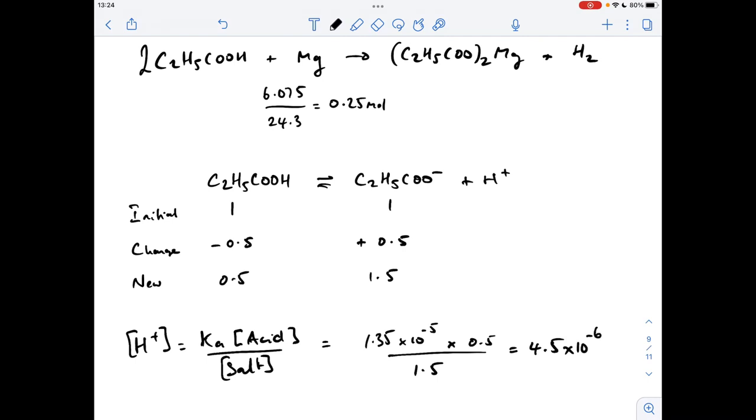So the new pH of the buffer is going to be minus log of this new H-plus ion concentration. So it's minus log of 4.5 times 10 to the minus 6. And to two decimal places, it comes out at 5.35.